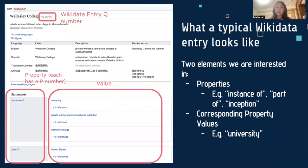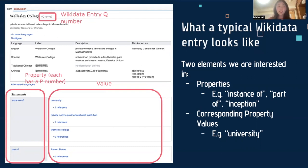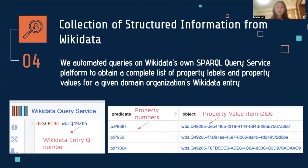To provide some background information on Wikidata entries, here's what a typical page looks like. In this example, the entry is on Wellesley College, which has a unique QID, Q49205. If you go down the page, you can see two columns of information: properties, which are categories of information, as well as their associated values. In our example, we can see that Wellesley College is an instance of university, private not-for-profit institution, and a women's college, and it's also part of the Seven Sisters. Once we had the Wikidata entry IDs, we then extracted all property and property values using Wikidata's own SPARQL query service, which takes in a QID and returns a complete list of properties and values for that entry.